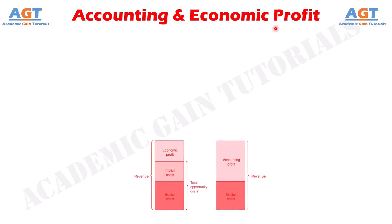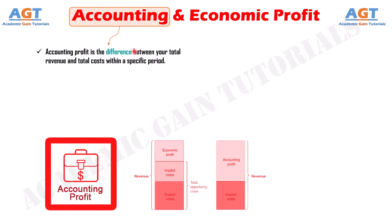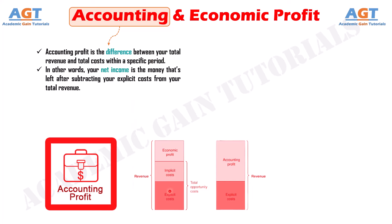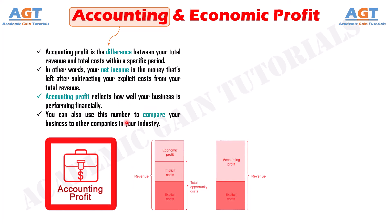Accounting profit is the difference between your total revenue and total costs within a specific period. In other words, your net income is the money that's left after subtracting your explicit costs from your total revenue. Accounting profit reflects how well your business is performing financially, and you can also use this number to compare your business to other companies in your industry.